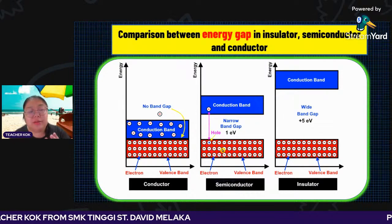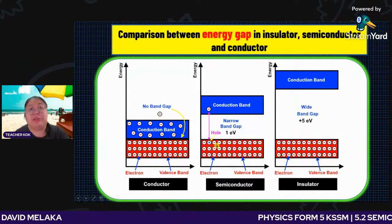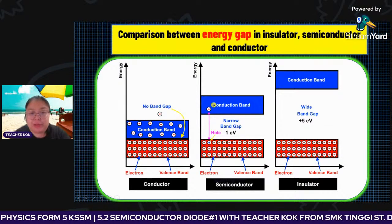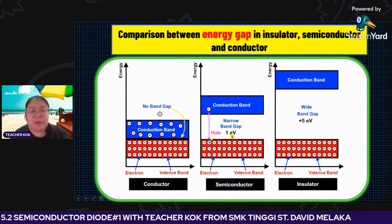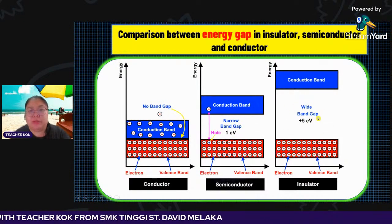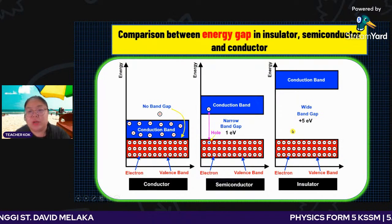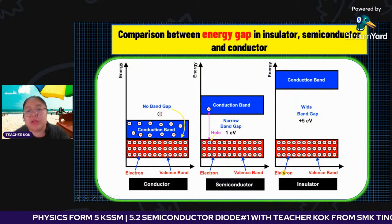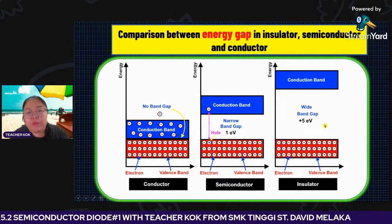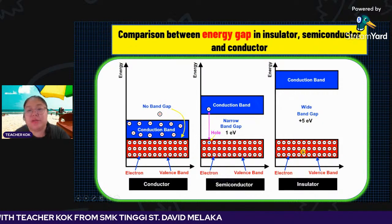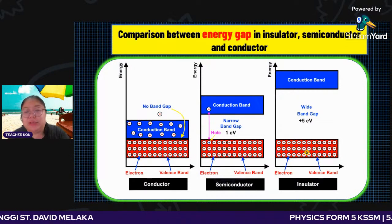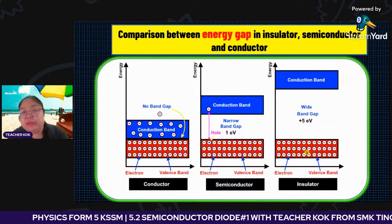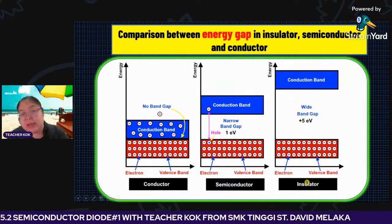Temperature increase means heating — you provide voltage to heat it, then the electron can jump over the narrow band and conduct electricity. For the insulator, the band is wider — there is more electrical potential energy. The electron needs to overcome this potential energy, which is why insulators cannot conduct electricity. The band is too wide, so the electron can never reach the conduction band. From here, we focus on the semiconductor.